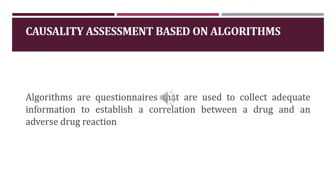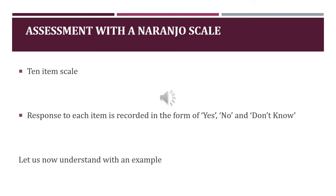The next method for causality assessment is based on algorithms. These algorithms are questionnaires used to collect data to establish a correlation between drug and adverse drug reaction. Different types of algorithms include Naranjo, Lasagna, and Kramers. As an example, we are going to understand the Naranjo algorithm. The Naranjo scale is named after Naranjo and colleagues who developed it in 1981.